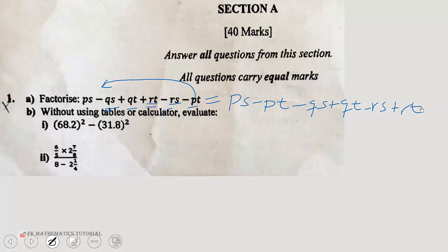So we now factor. For the first two terms p is common, so p, we have s minus t. We are going to make sure that we have s minus t common to all. So when we come here we need to factor negative q, so negative q we have s minus t, so that when we multiply this by this we get negative qs, when we multiply this by this we get positive qt. Then again we factor negative r, we have s minus t, such that when we expand this we get this, and we multiply this by this we get this.